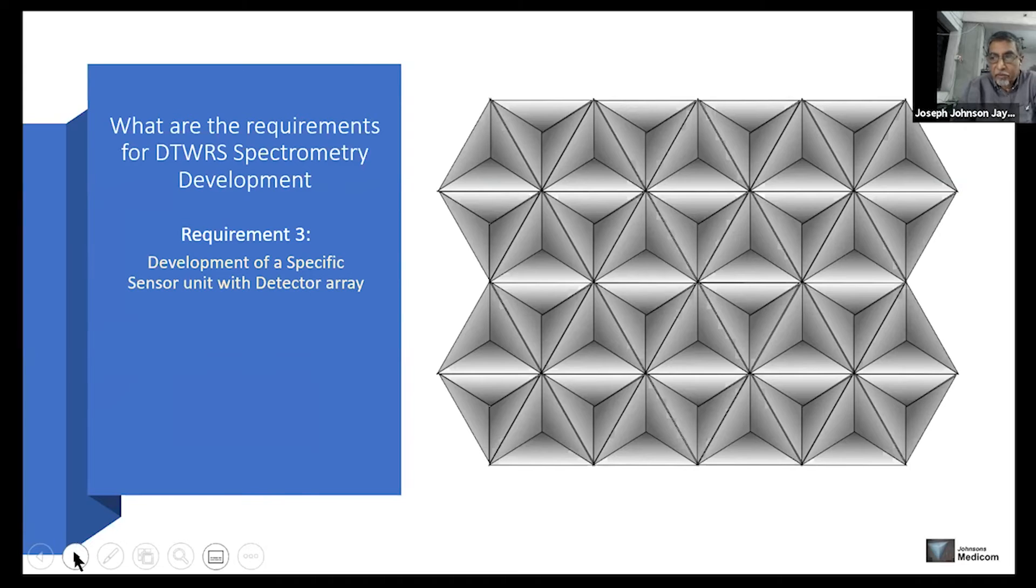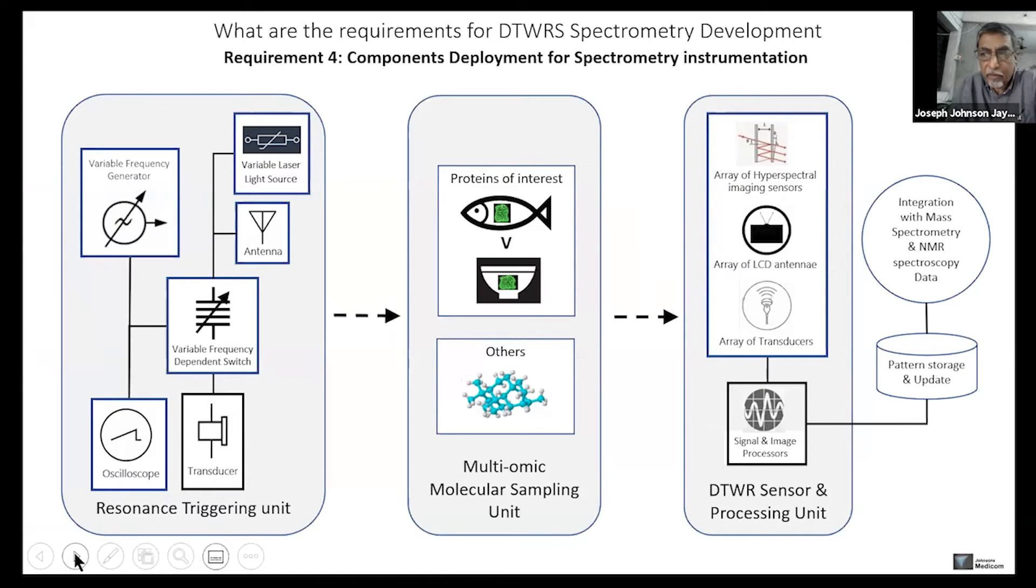So the next thing is, using this specific sensor unit, we have to build three units. One is the resonance triggering unit, because unless we trigger a resonance, we cannot absorb that oscillation of that molecule. Then the next is the multi-ohmic molecular sampling unit. In that unit, we will load which specimens have to be loaded, either in vivo or from the substrate. And the third one is the DTWR sensor with the signal and the imaging processing unit.